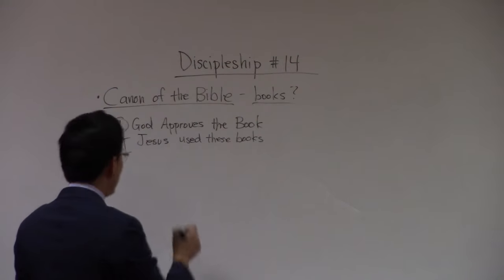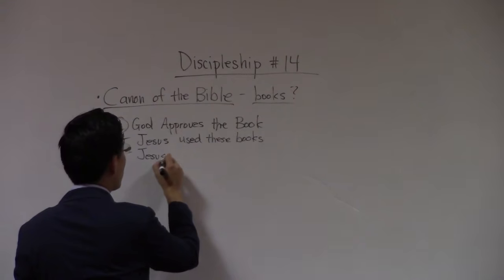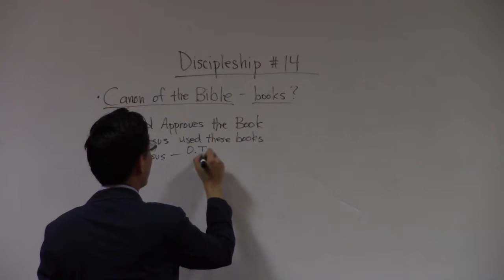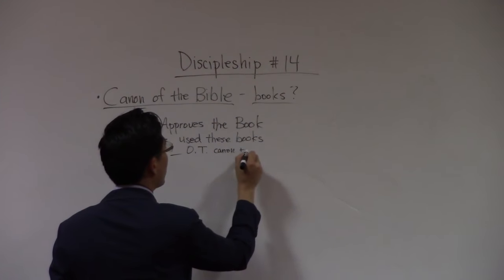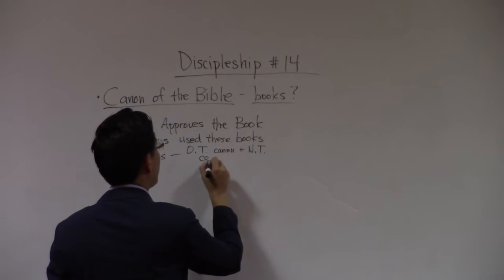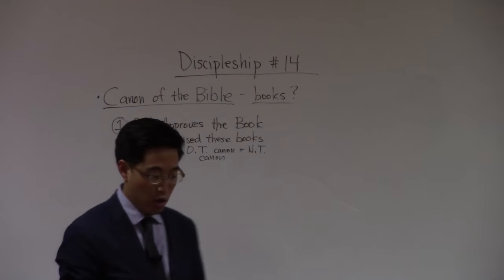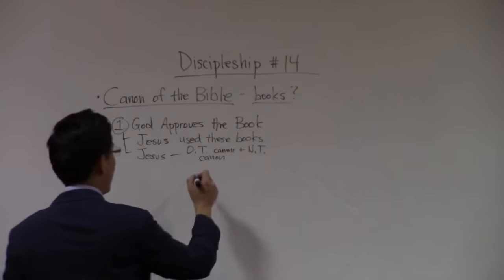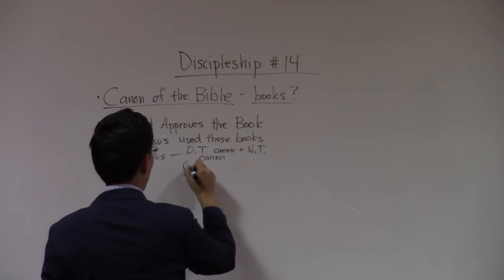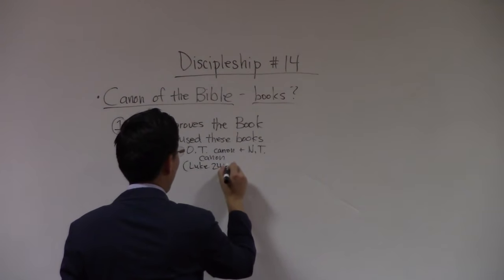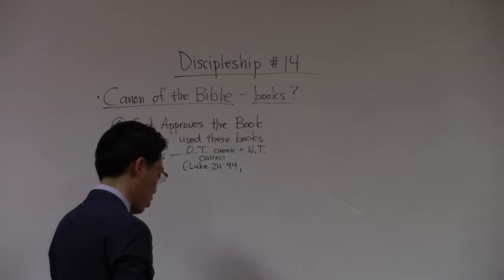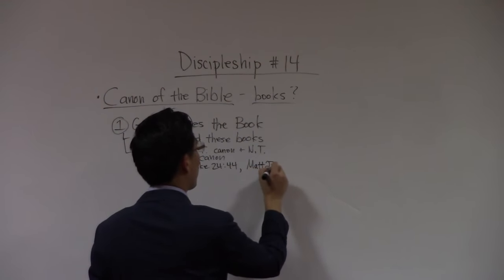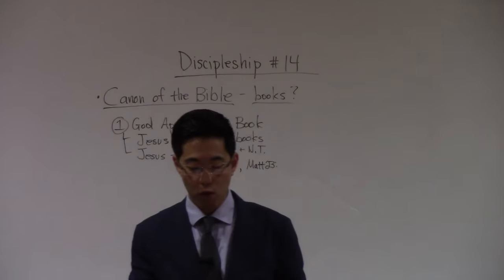Not only did he use these books, Jesus himself laid out pretty much the whole canon for you. This is the most important point. He laid out the Old Testament canon as well as the New Testament canon. What he did was mentioned in Luke chapter 24, verse 44. So these are important verses to write down. We're going to look at Luke chapter 24 and verse 44 — these are the two most famous verses that you should mark down, extremely helpful concerning biblical canon. The second one is Matthew 23.